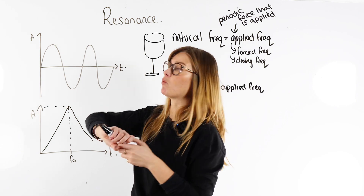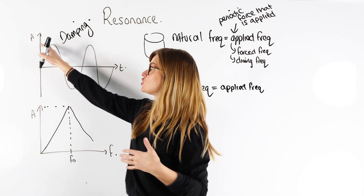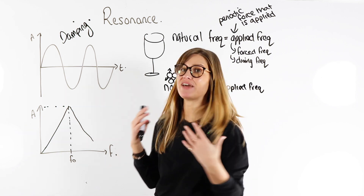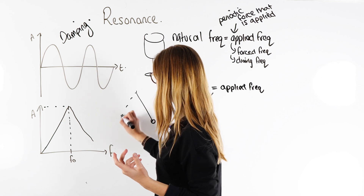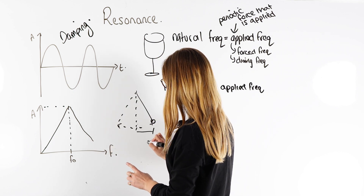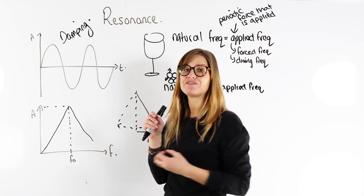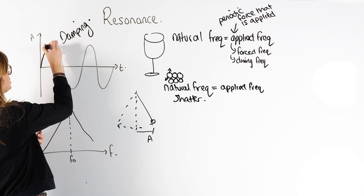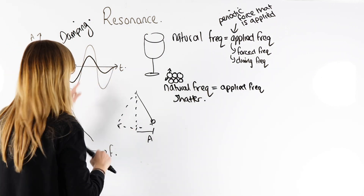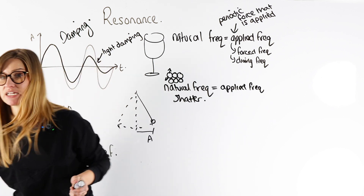The last thing you need to know about resonance is dampening. Particles have an amplitude they oscillate at, but what actually happens is we have air resistance. So let's say I have a pendulum that is oscillating — the amplitude, which is the maximum displacement from its equilibrium position, doesn't stay the same. The amplitude will decrease over time because of air resistance, until eventually it stops vibrating. That's called light dampening — it causes the oscillations to decrease over time.